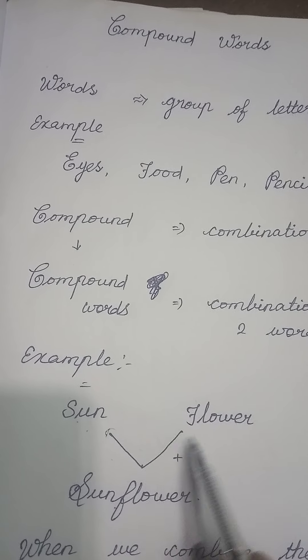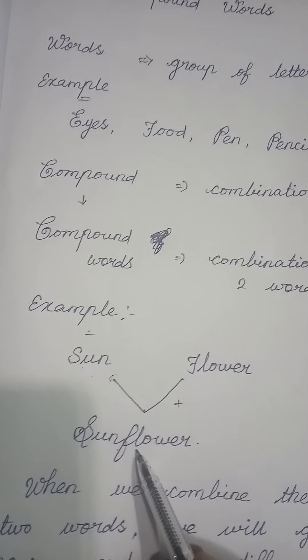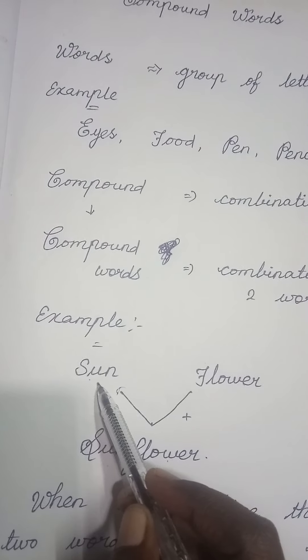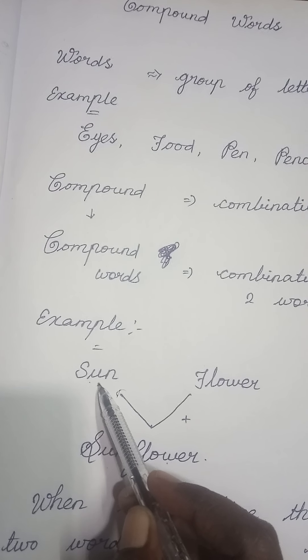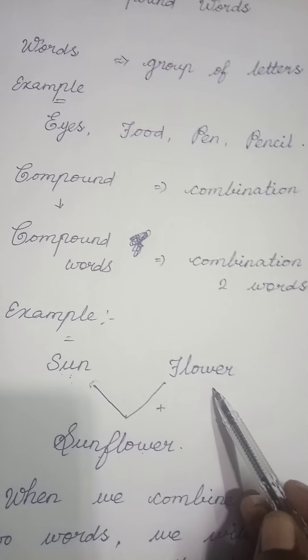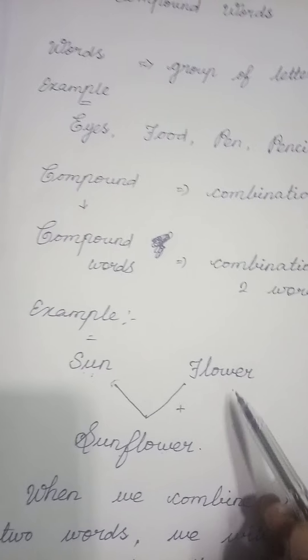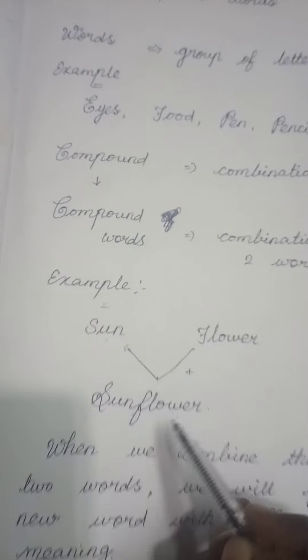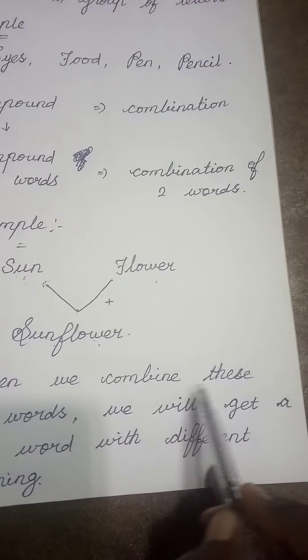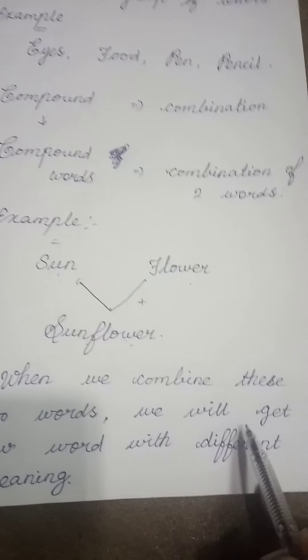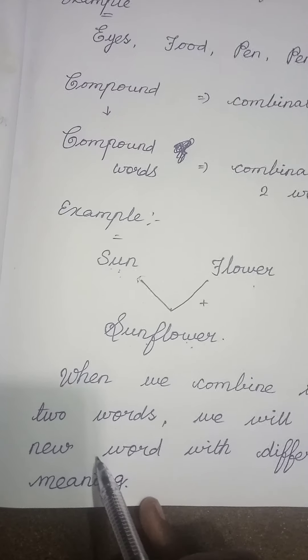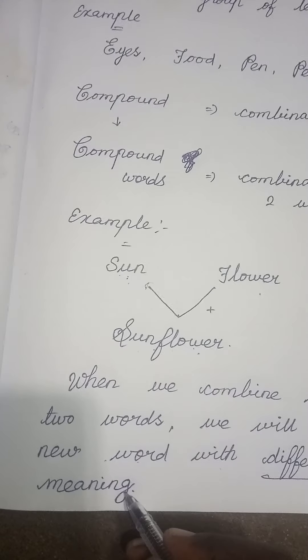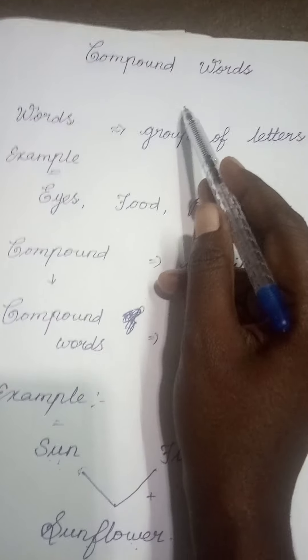But, when we combine these two words, what will we get? Sunflower. Sun is a simple word. Single word gives a particular meaning. Flower is a word gives a particular meaning. But, the combination of two words will give a different meaning now. So, when we combine these two words, we will get a new word with different meaning. That is, compound words.